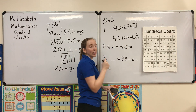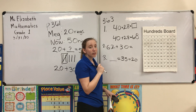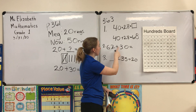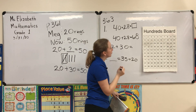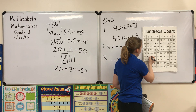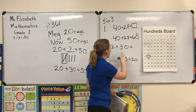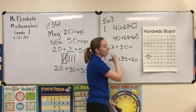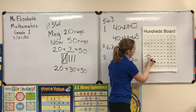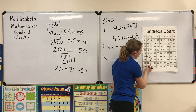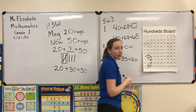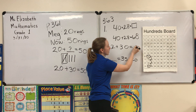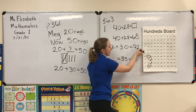When thinking about what number to start with, we start with the number that has ones. 30 has zero ones, so we start with 62. Circle 62, then think: how many tens do we need to add? We know 30 has three tens. Count three rows down and circle it. So 62 plus 30 is 92.